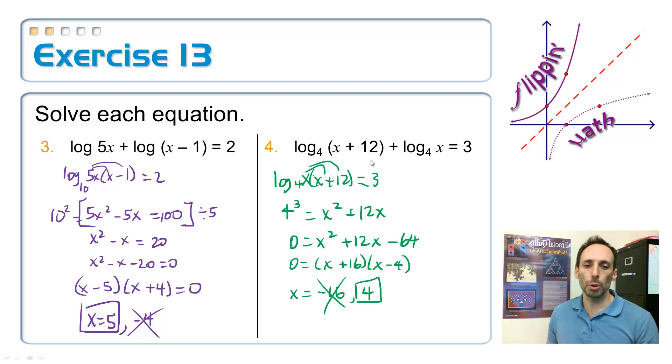Okay, finally on number 4, it proceeds in pretty much the same way. And once we get down to the end, after we factor the thing, we get negative 16 and 4. 4 is okay, but that negative 16 makes the logarithms undefined, so you cast it out.